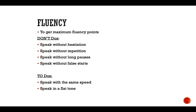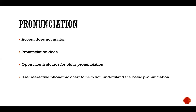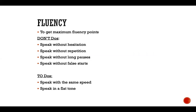Speaking depends on fluency and pronunciation — these factors answer the question of how to speak fluently and with the right pronunciation. For maximum fluency points, there are four things not to do: speak without hesitation, speak without repetition, speak without long pauses, and speak without correcting yourself.